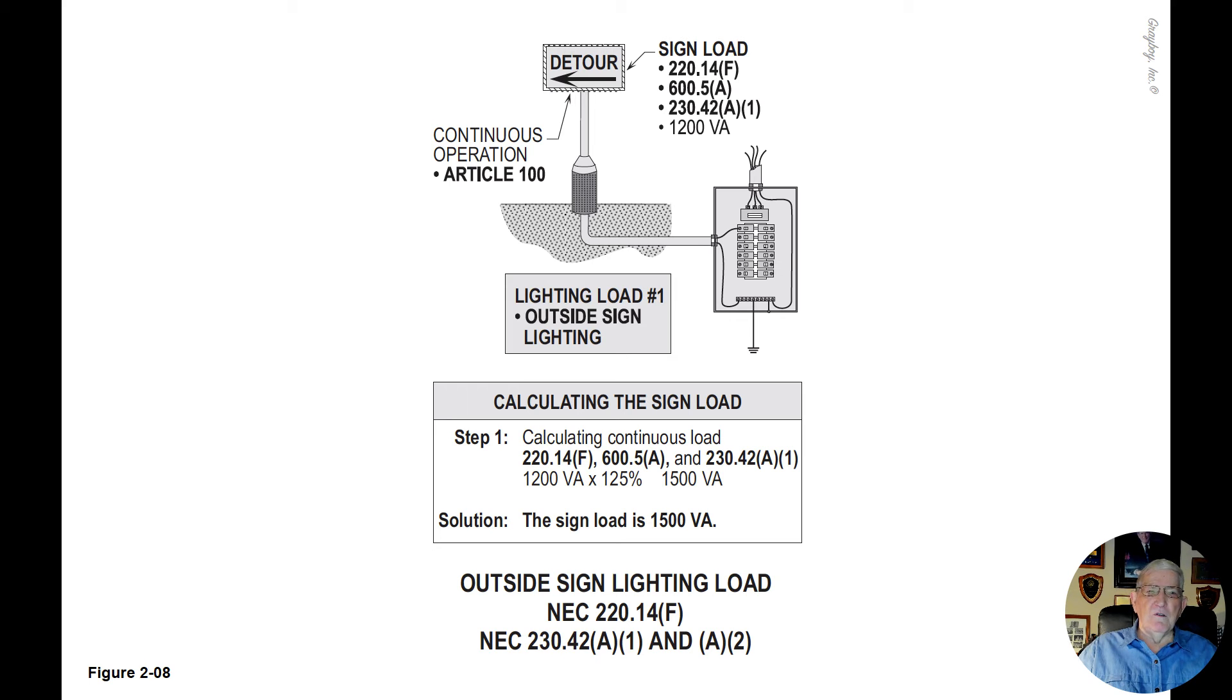Notice that basically 600.5 along with 220.14F working together would require a 20 amp circuit brought to the front of a facility where you had direct access by a pedestrian.